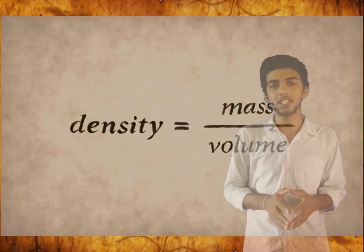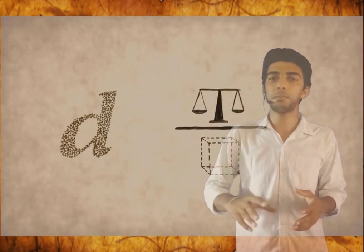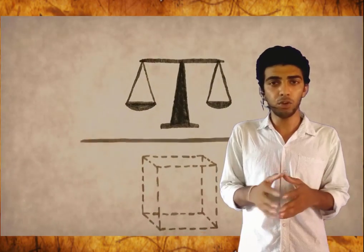He found the way to solve the problem. He just needs to calculate the density of the crown and compare it to the density of pure gold. We know that density is the measurement of mass divided by volume, and the density of pure gold is much more than that of silver. So Archimedes just needs to calculate the density of the crown, for which he needs to measure the mass and then the volume of the crown.